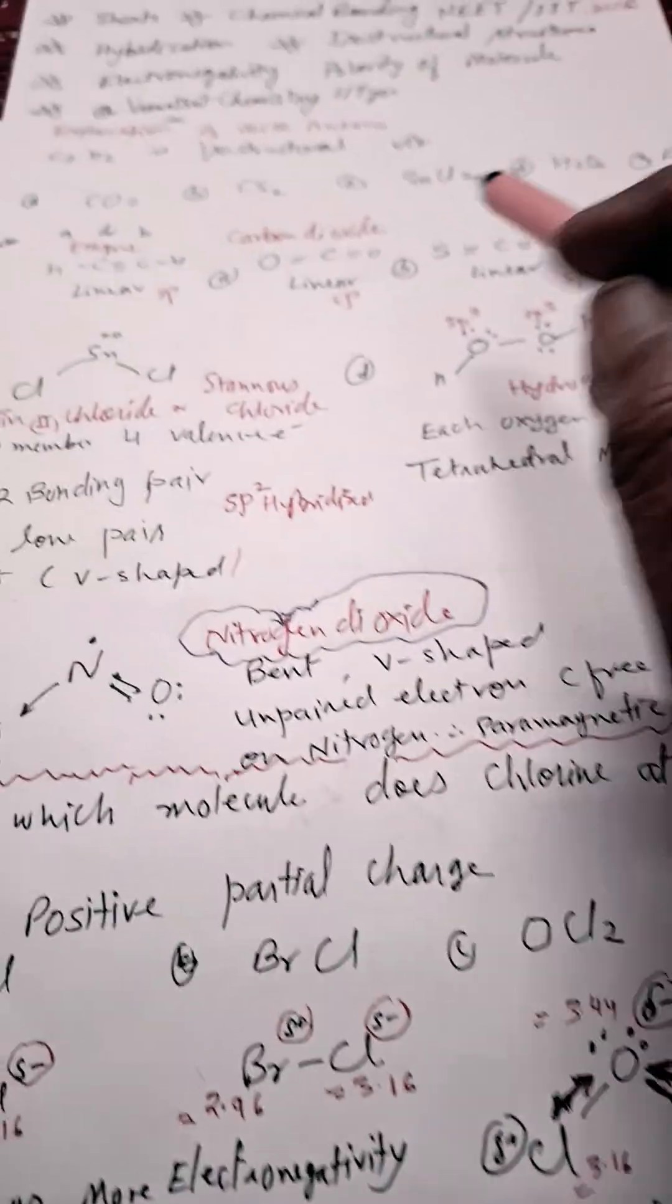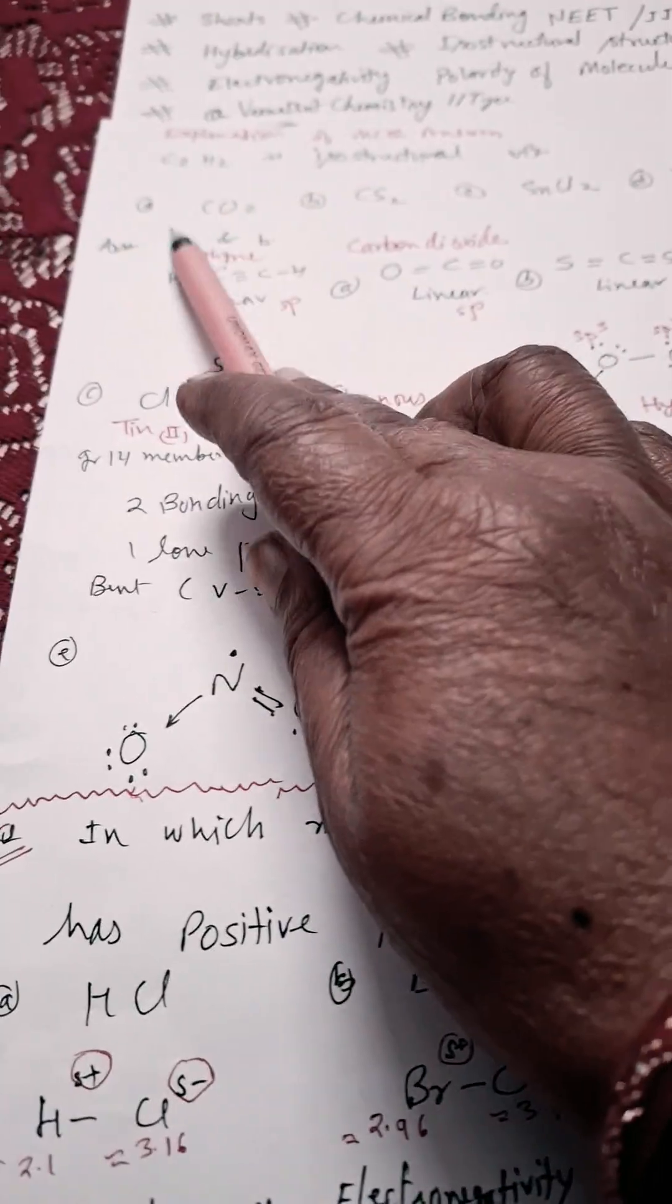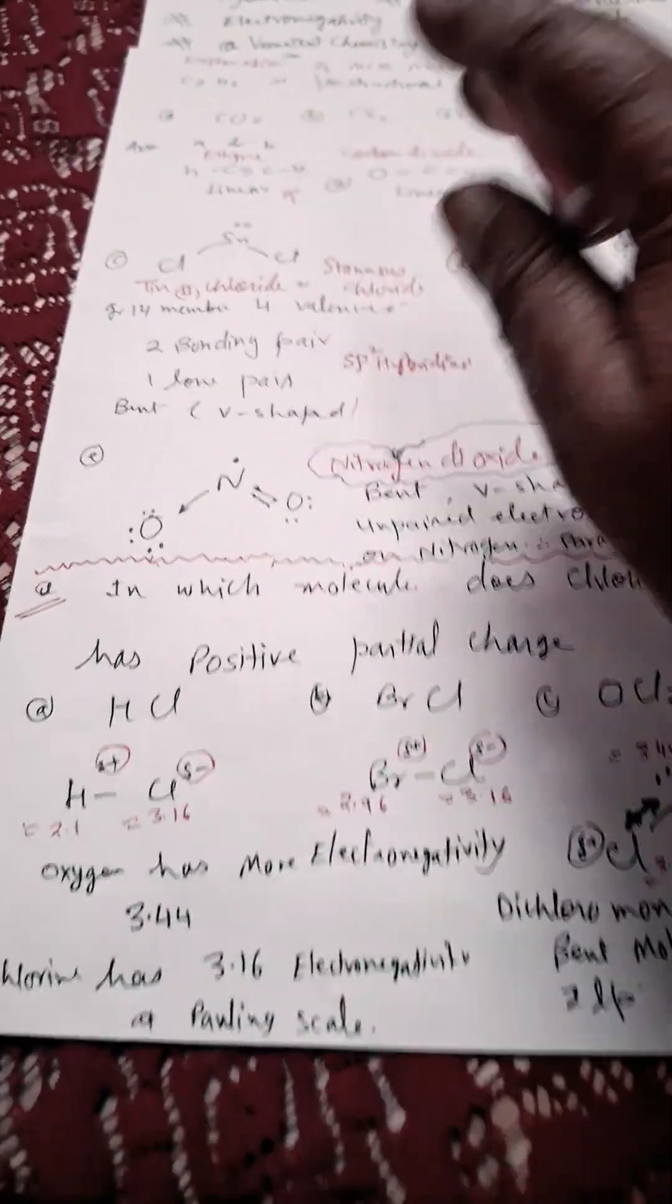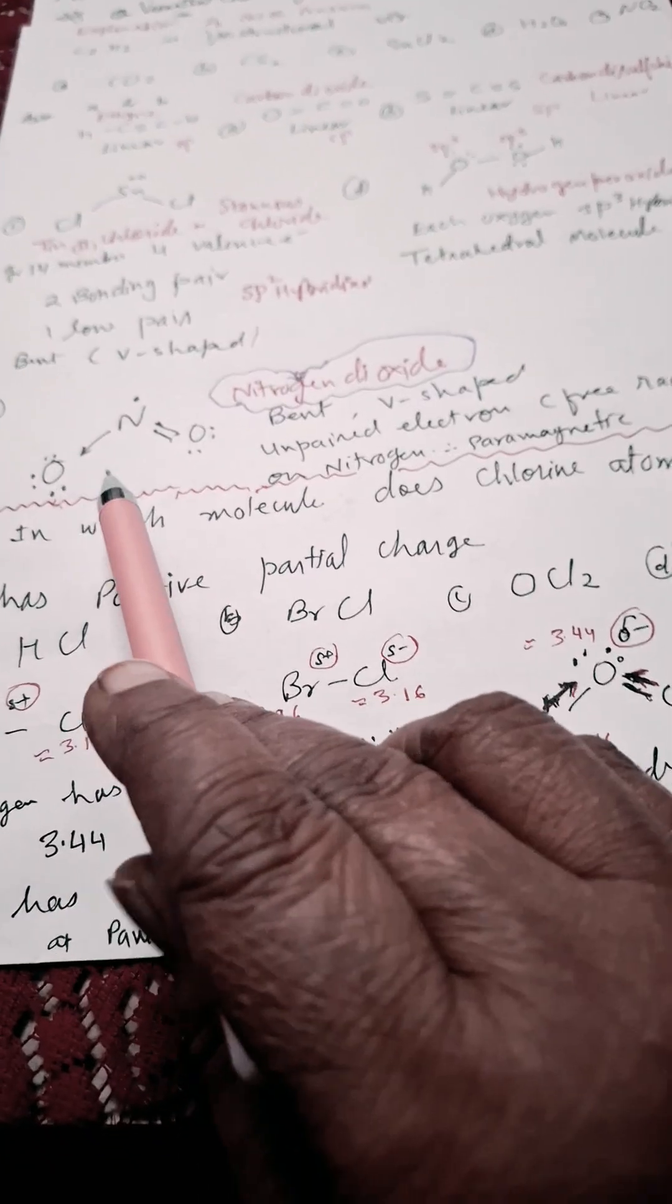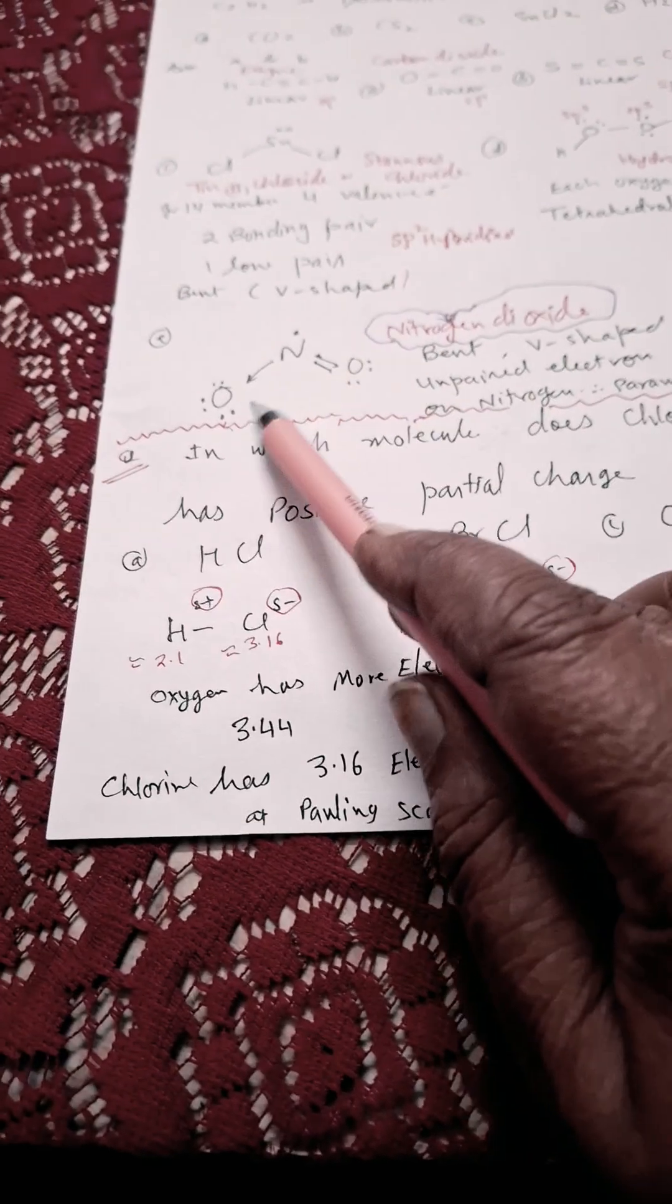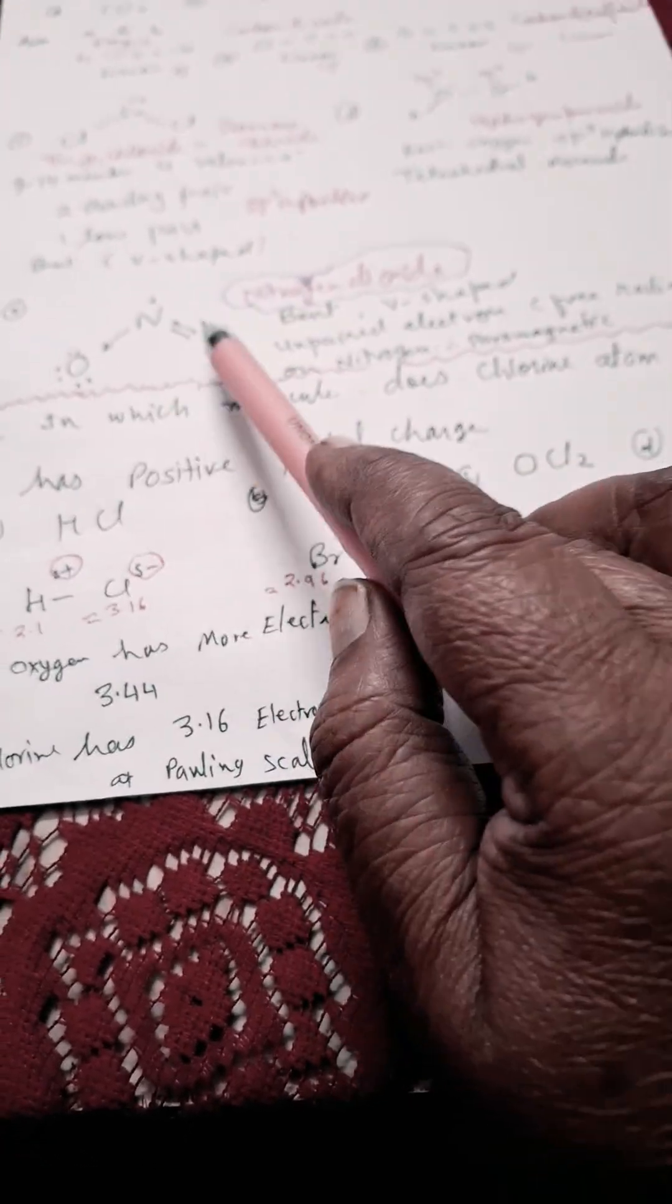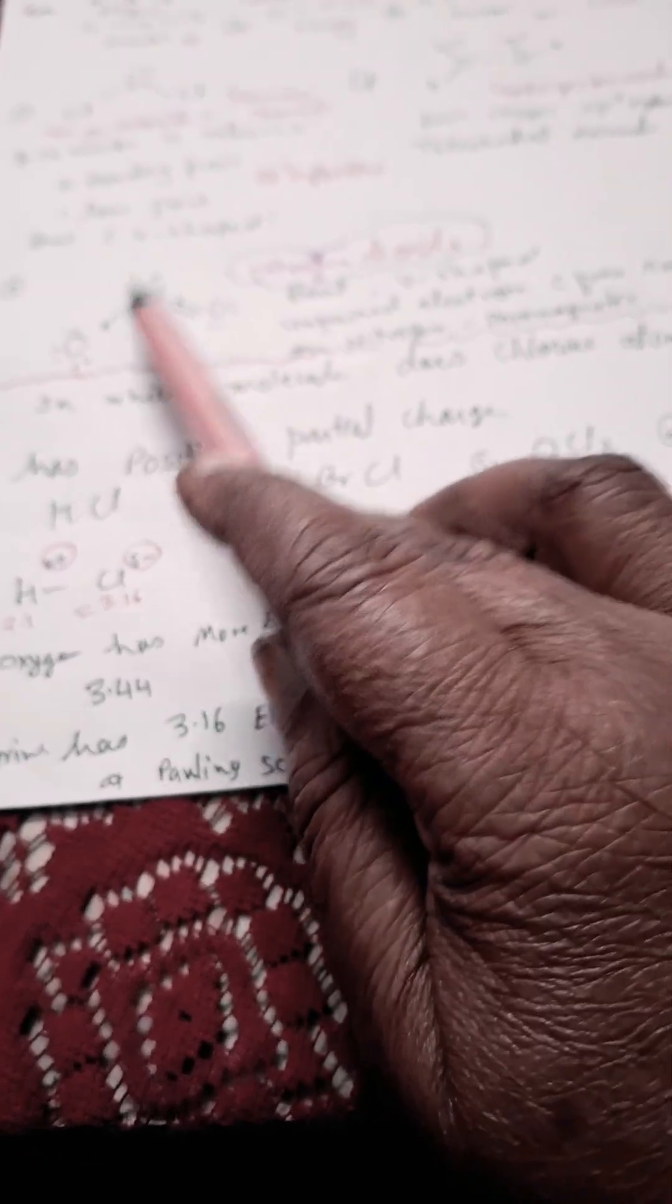So only A and B are isostructural with ethyne. Now in case of nitrogen dioxide, you see here, this is the structure: one lone pair of electrons, two surrounding atoms. So one unpaired electron, not lone pair, one unpaired electron and two oxygen atoms around the nitrogen.